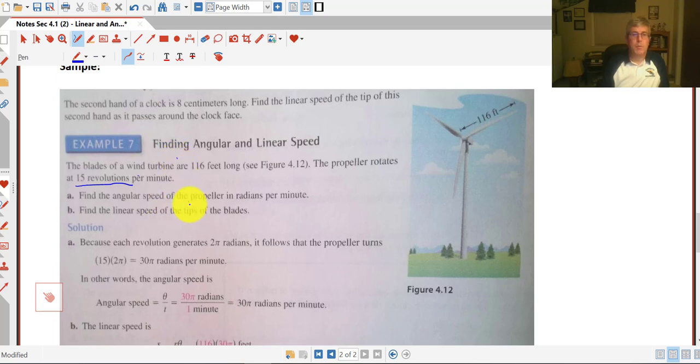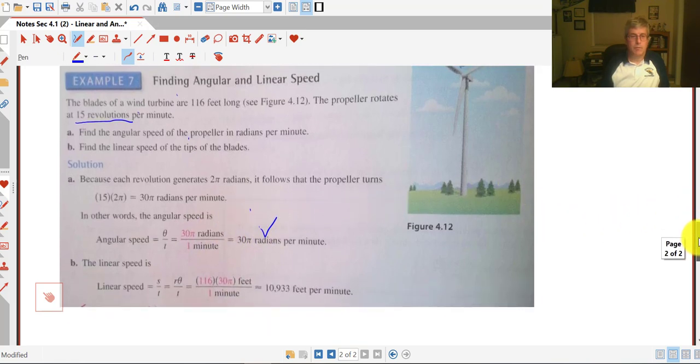Find the angular speed of the propeller in radians per minute. So our angular speed is theta over t. So our theta with 15 revolutions is 15 2 pi's or 30 pi. And divided by t is one minute. So 30 pi over 1 is simply 30 pi radians per minute. That was pretty easy arithmetic there.